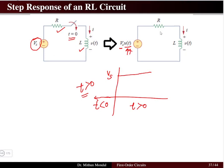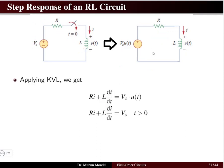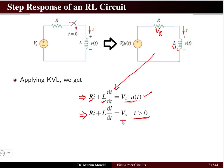Once the switch is closed, the resistor and inductor come in series and current flows in the network. Applying KVL, the voltage drop across the resistor is i·R, and across the inductor is L·di/dt, which together equal the supply voltage Vs·u(t). For t > 0, the KVL equation simplifies to: i·R + L·di/dt = Vs.